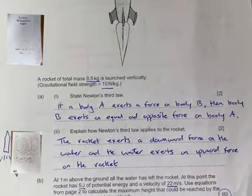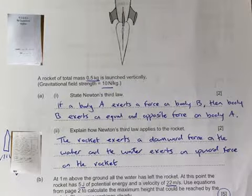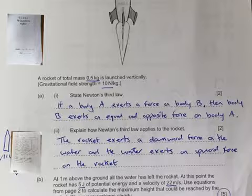Explain how Newton's third law applies to the rocket. Well, if the rocket exerts a downward force on the water, then the water is going to exert the same force, an upward force, on the rocket. So the force is balanced, which makes it move.